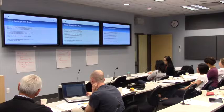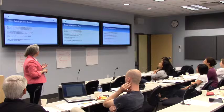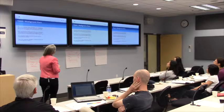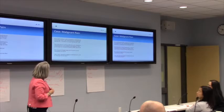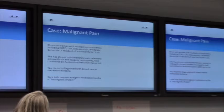We're going to start with a case to frame this. An 83-year-old woman with multiple comorbidities: COPD, chronic renal failure, osteoporosis, moderate dementia. She's a resident of your facility for three years, longer than the average of 18 months. She has chronic mild to moderate pain related to osteoarthritis and diabetic neuropathy, well controlled. She was recently diagnosed with metastatic breast cancer to bone.